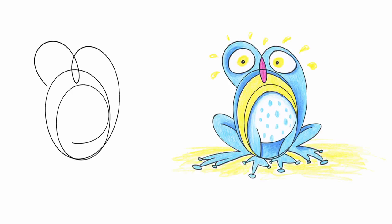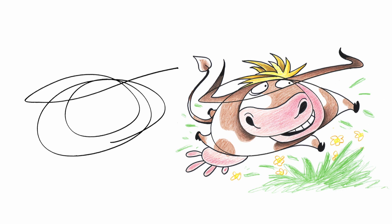Now here's a few other ways of scribbling. What do you think this round shape looks like? A funny frog. And how about this round shape? A cow.